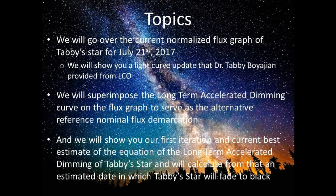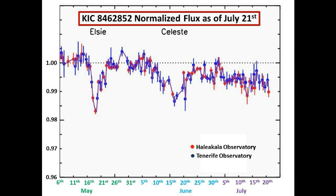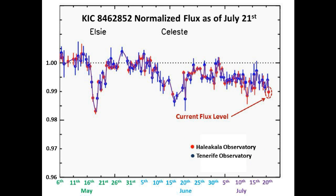We'll calculate from that an estimated date in which Tabby's Star will fade to black. This is today's flux graph in the R band, taken at two different locations on opposite sides of the globe and across multiple telescopes at each site. This is today's current flux measurement in red, and referencing the conventional normalized flux line, it looks like we are still below nominal flux levels.